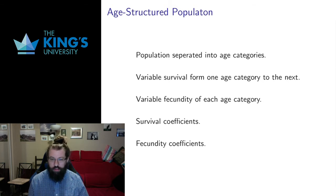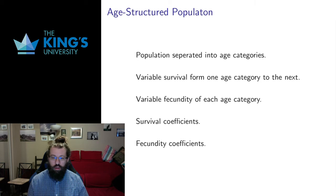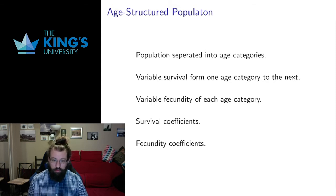I can also have fecundity — that's the term we use to represent the birth rates from each age category. It may be that not all age categories will produce offspring; you might need to reach a certain age before a member of the population is old enough to give birth. So we have variable fecundity, and these two things get measured as survival and fecundity coefficients.